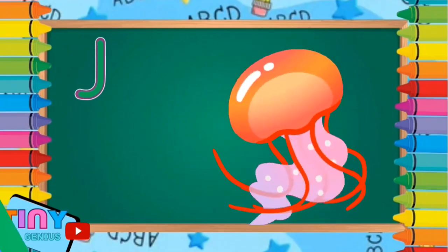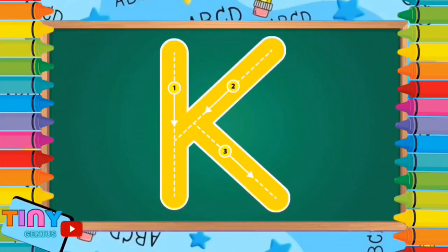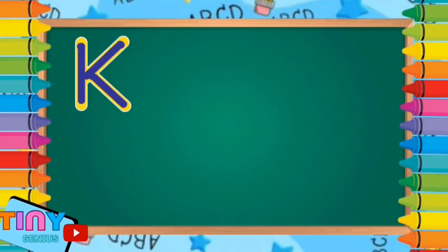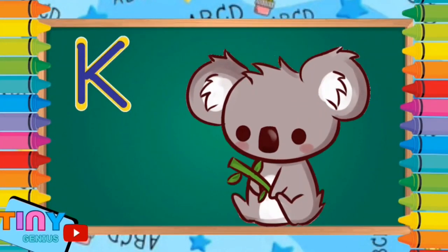Let's do another one, letter K. Slant down, slant down, slant down. K is for koala.